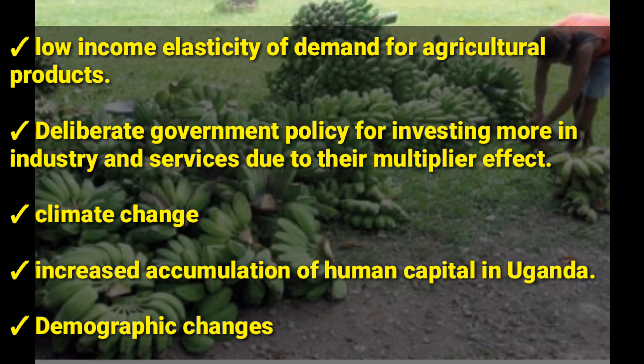Another reason is the deliberate government policy of investing more in industry and services due to their high multiplier effects. The industry and service sectors have lower risks and higher returns compared to agriculture. Since agriculture depends on nature, there are higher chances of making losses, so the government ends up investing more in industry and service and forgets the agriculture sector.